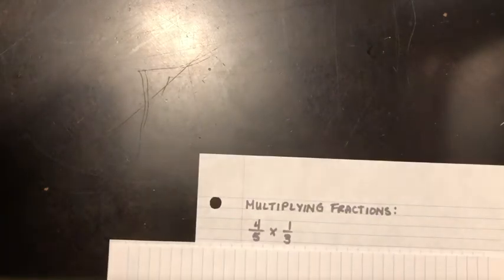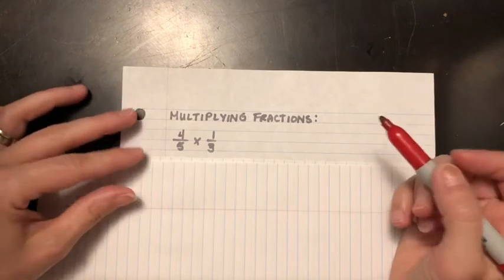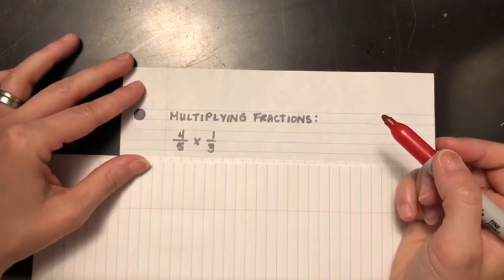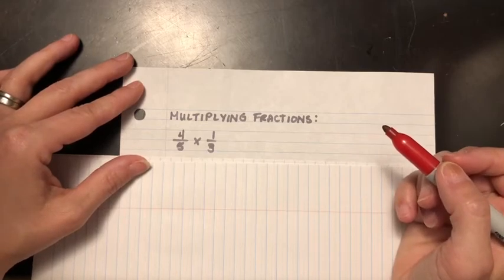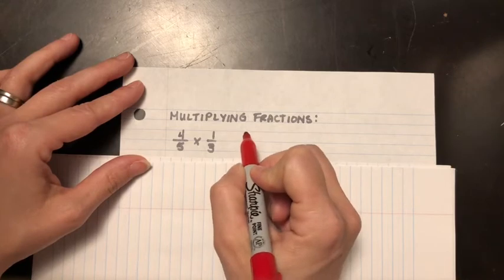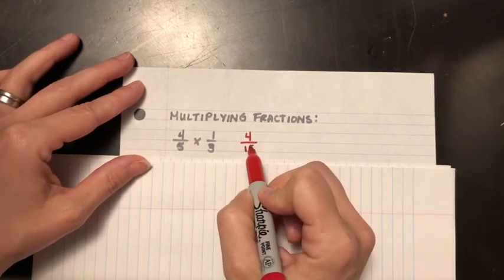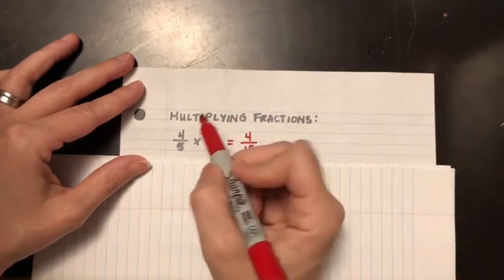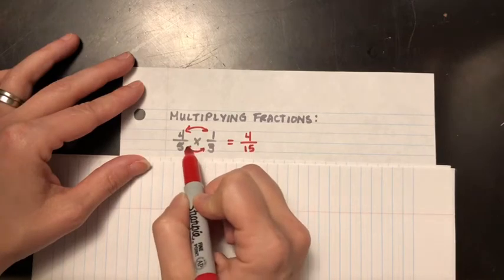All right, multiplying fractions. When we're multiplying fractions, we don't have to figure out a common denominator. We're allowed to just multiply the top by the top, multiply the bottom by the bottom, and that gives us our answer. In this case, 4 times 1 is 4, and 5 times 3 is 15. That is my answer.